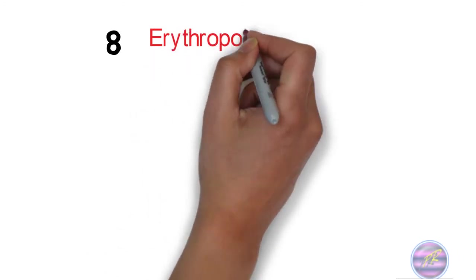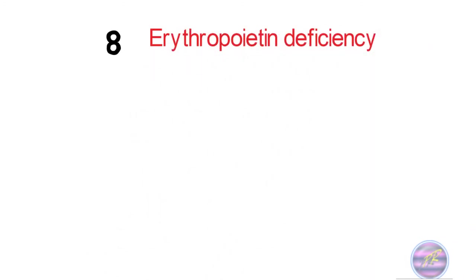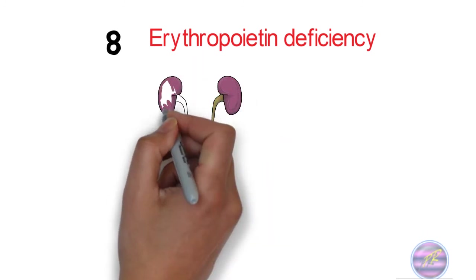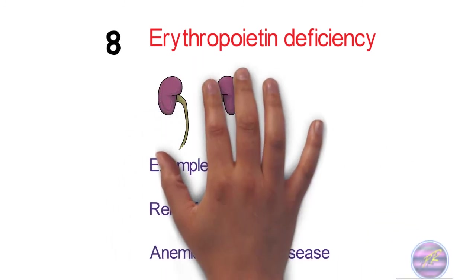The eighth cause is erythropoietin deficiency. The example for this is renal failure as kidney is the major producer of erythropoietin.